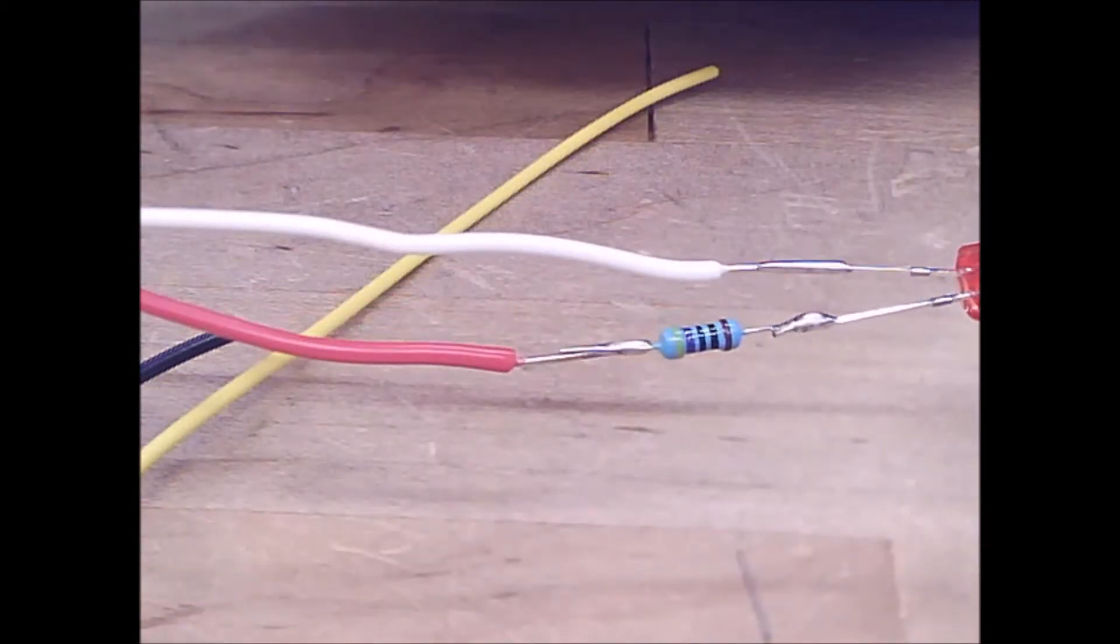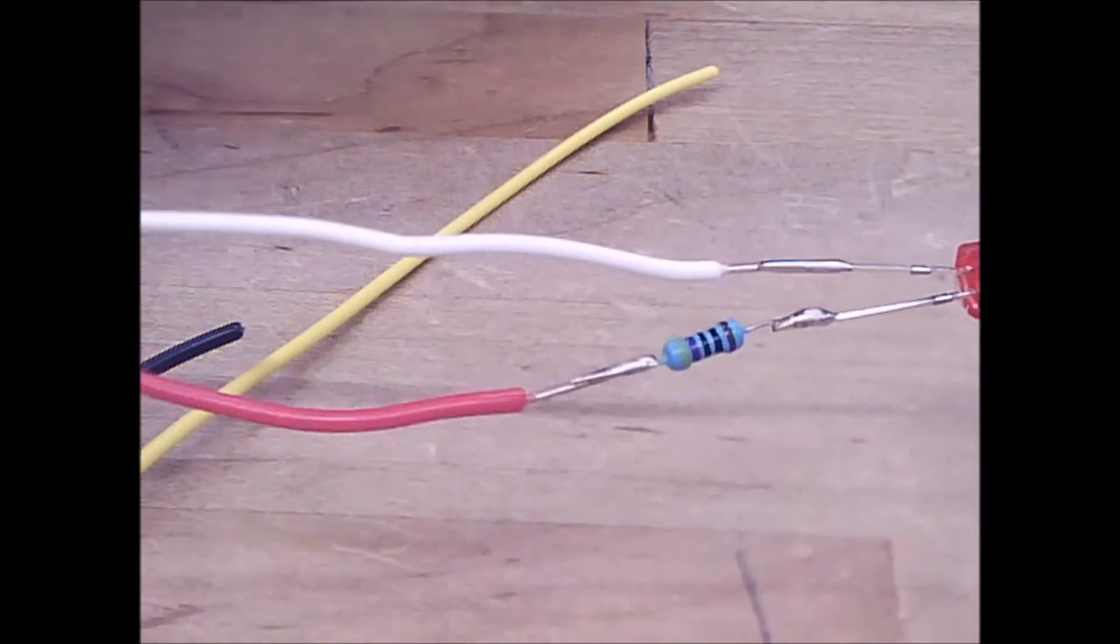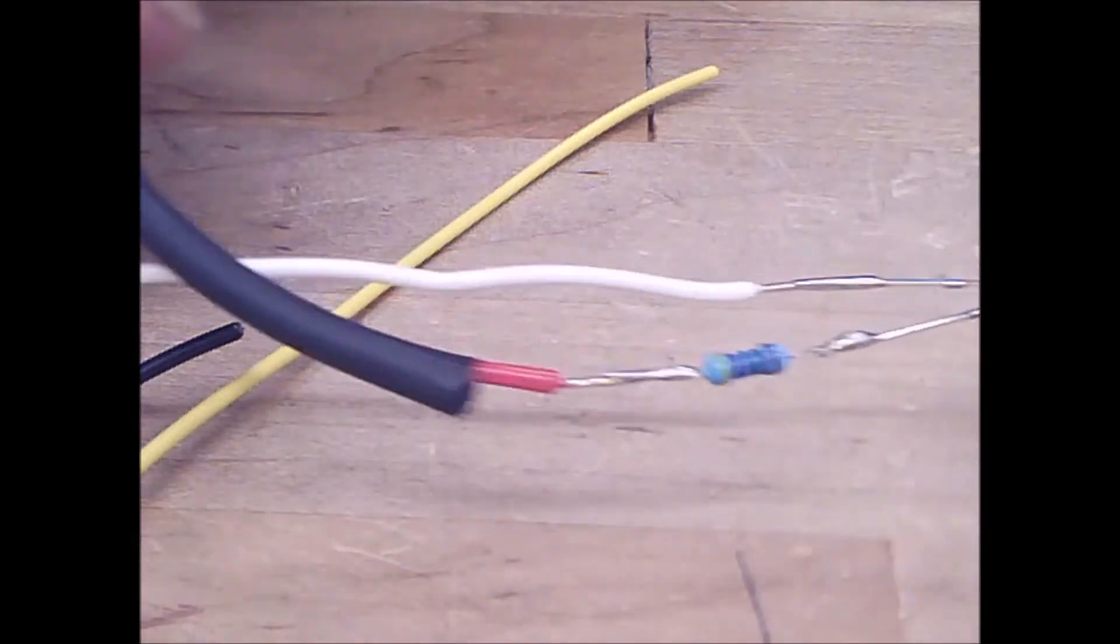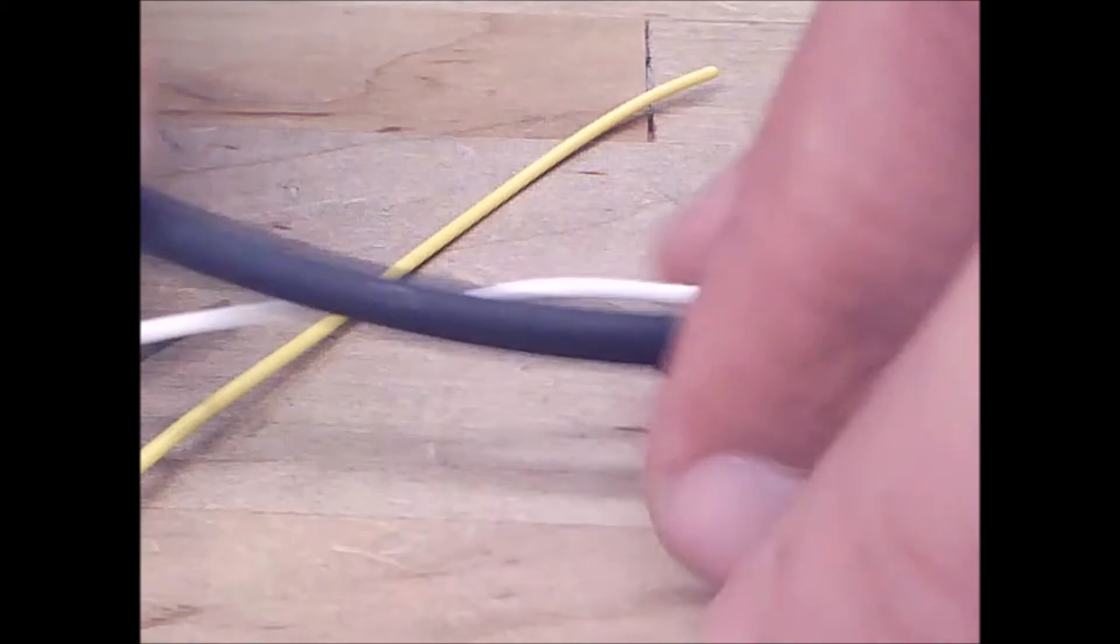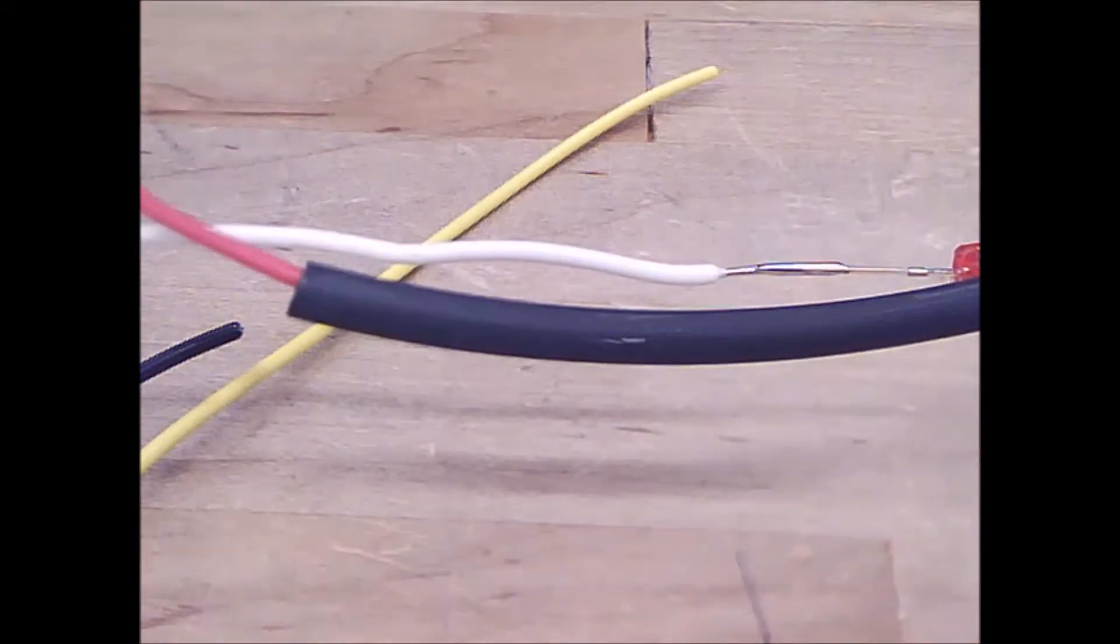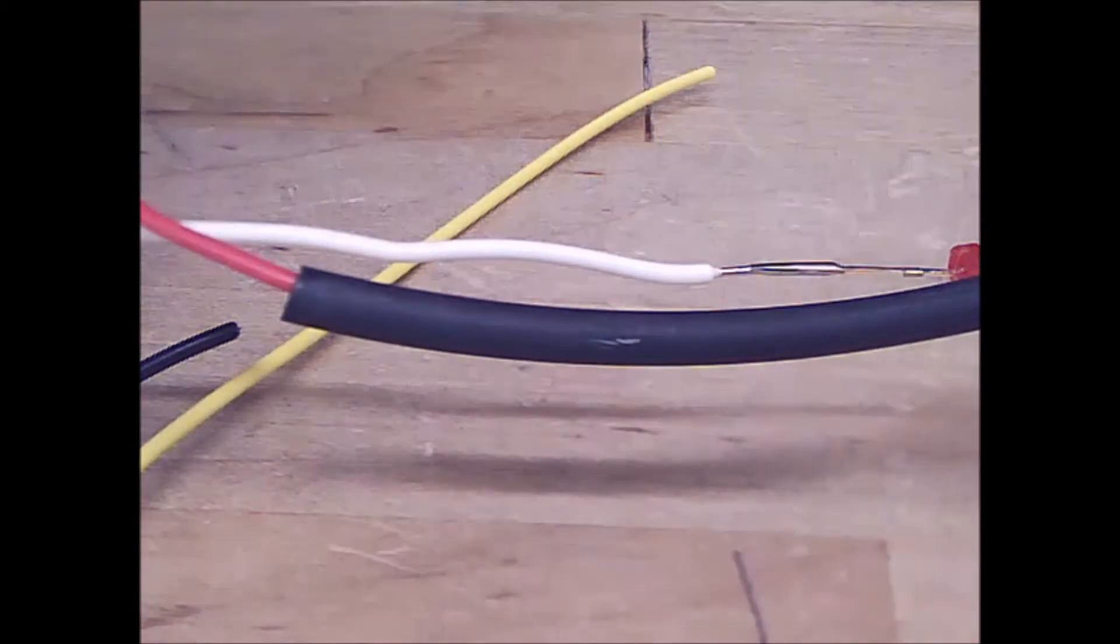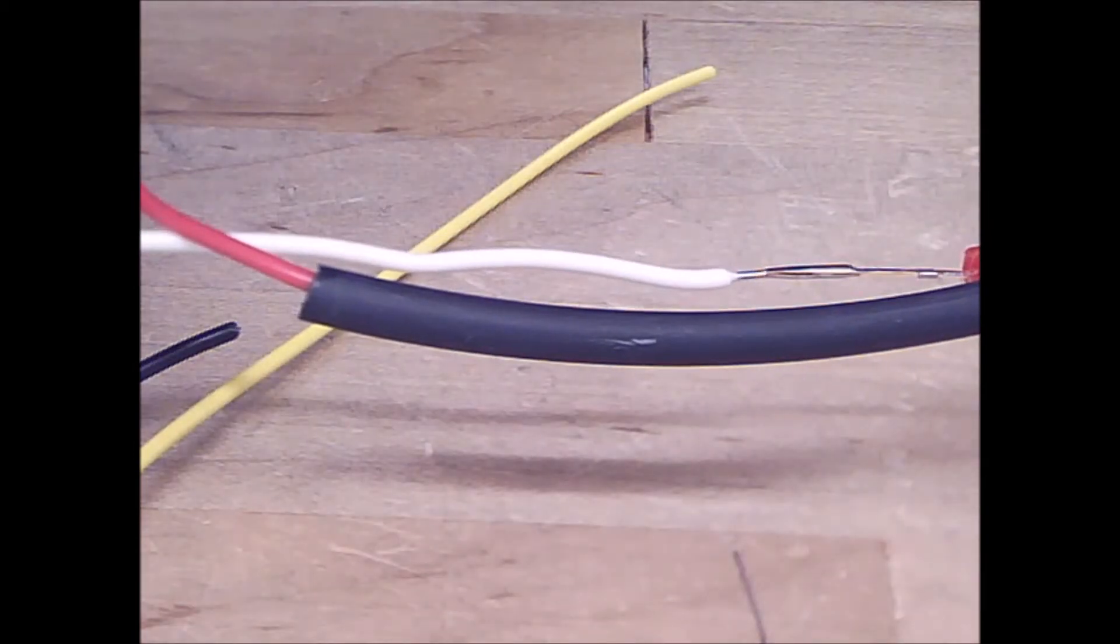All right. Then all you got to do is simply feed over the heat shrink over the wire, covering the entire resistor all the way down to the LED. I'm going to go ahead and do the other wire as well.